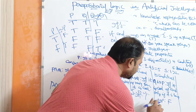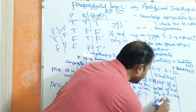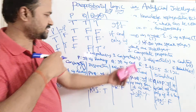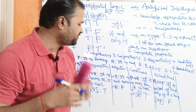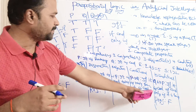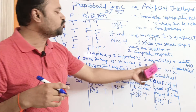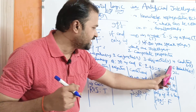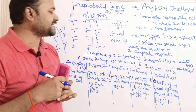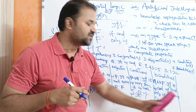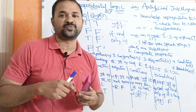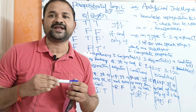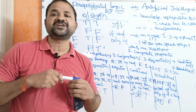Let us write R ↔ S. R = '2 + 3 = 5' returns true, and S = '1 > 2' returns false. So true ↔ false = false as the output. This concludes propositional logic in artificial intelligence.